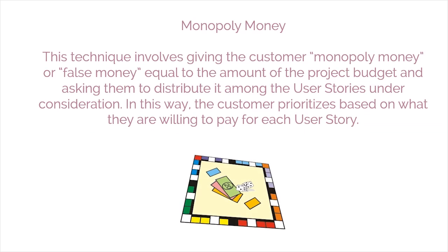Monopoly money is a technique that involves giving the customer monopoly money, or false money equal to the amount of the project budget, and asking them to distribute it among the user stories under consideration. In this way, the customer prioritizes based on what they are willing to pay for each user story.